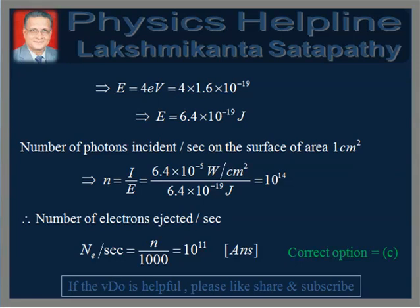Therefore, the number of photons incident per second on the surface of area 1 centimeter square is given by N = I/E. Putting the values in and simplifying, we get N = 10¹⁴.